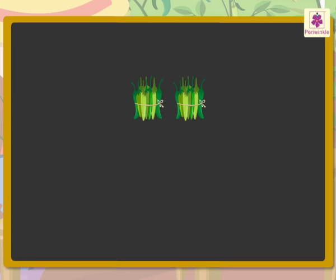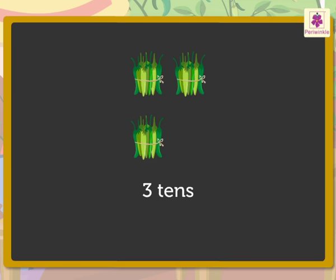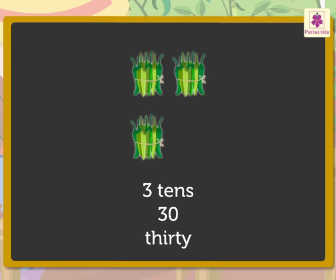Look, now there are two groups of tens. Two tens chillies mean twenty chillies. Three tens mean thirty chillies.